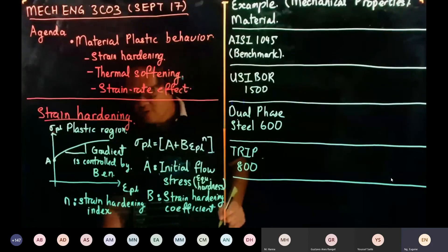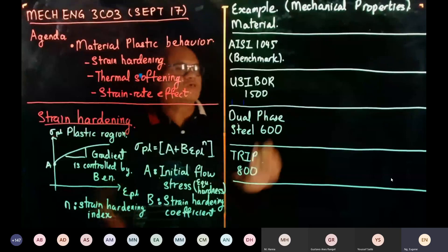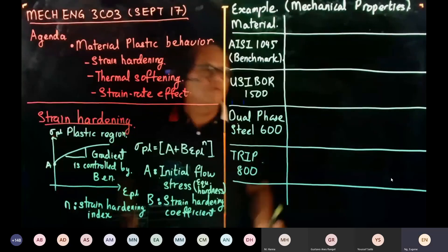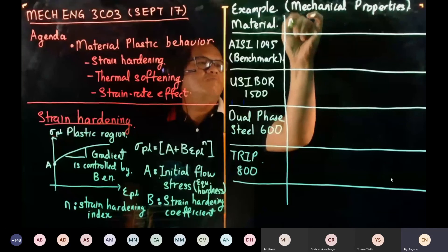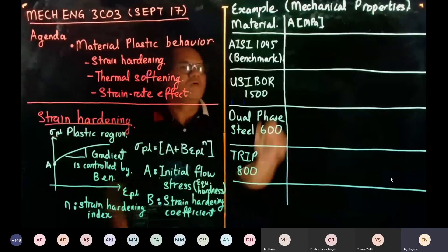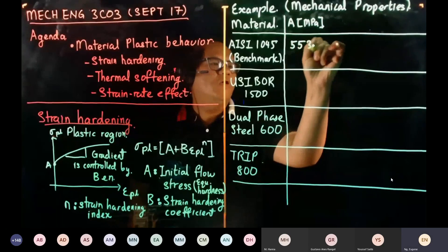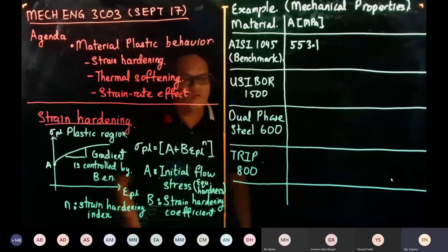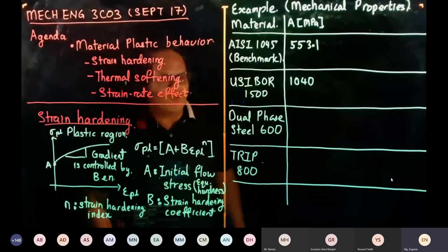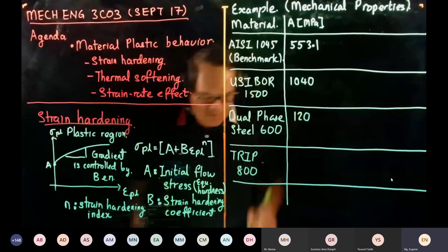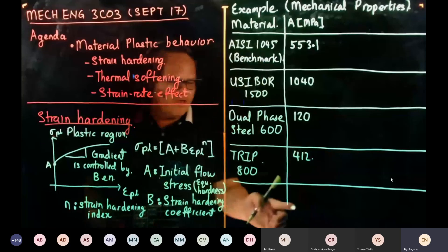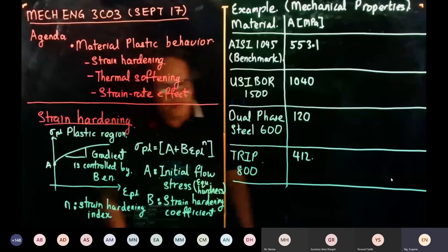Looking at the a-values in MPa: for AISI 1045 it's 553.1 MPa; for Usibor 1500 it's 1040 MPa; for Dual Phase Steel 600 it's 120 MPa; and for TRIP 800 it's 412 MPa.